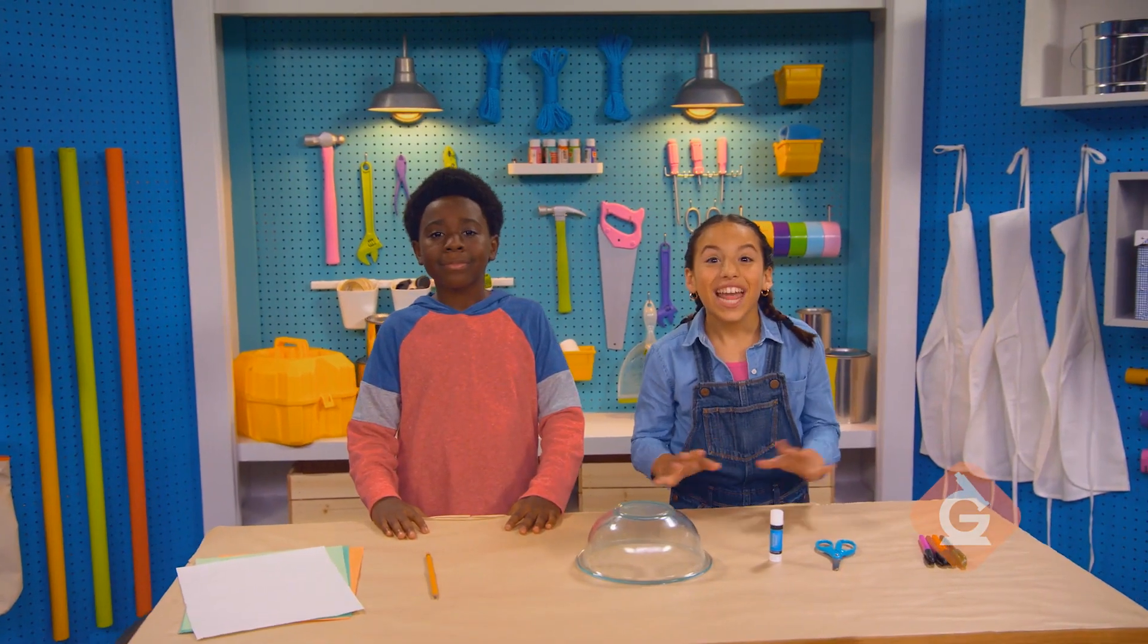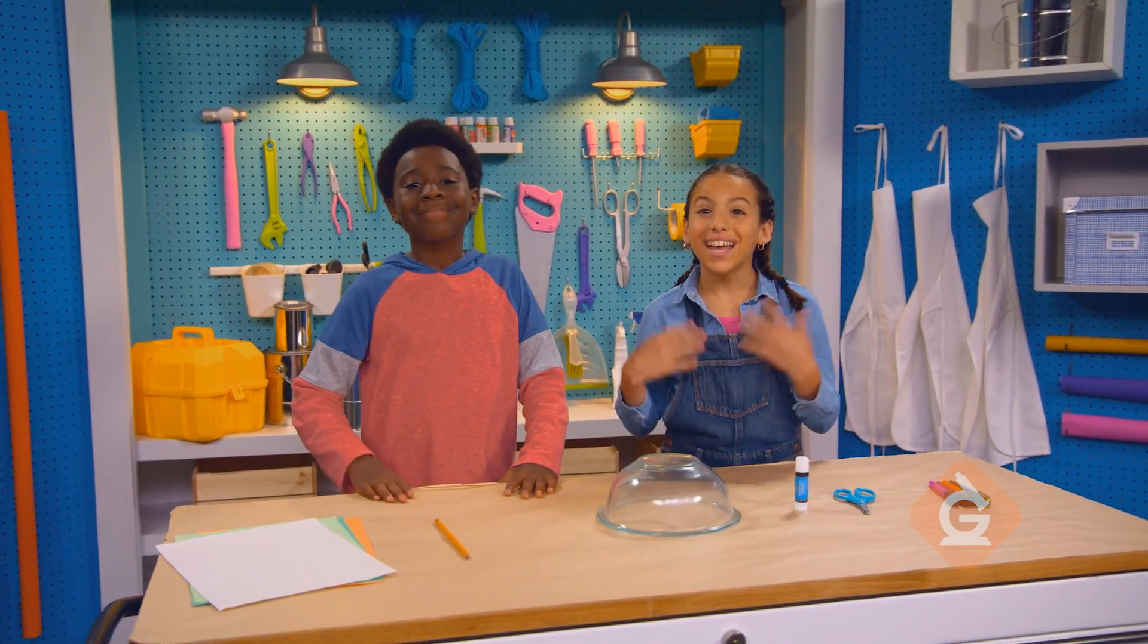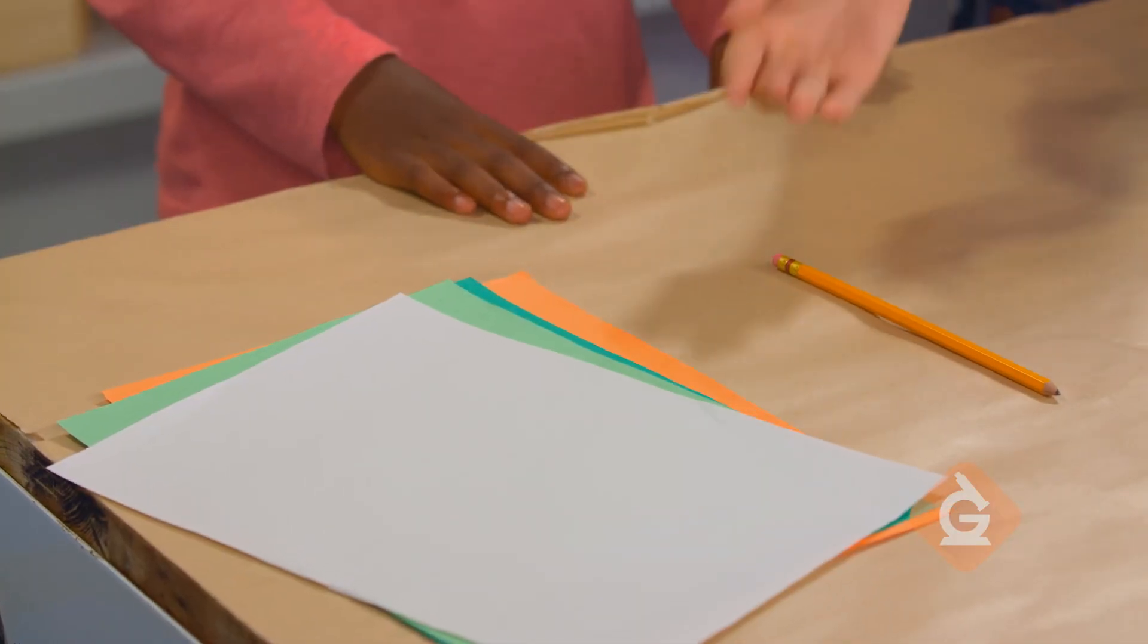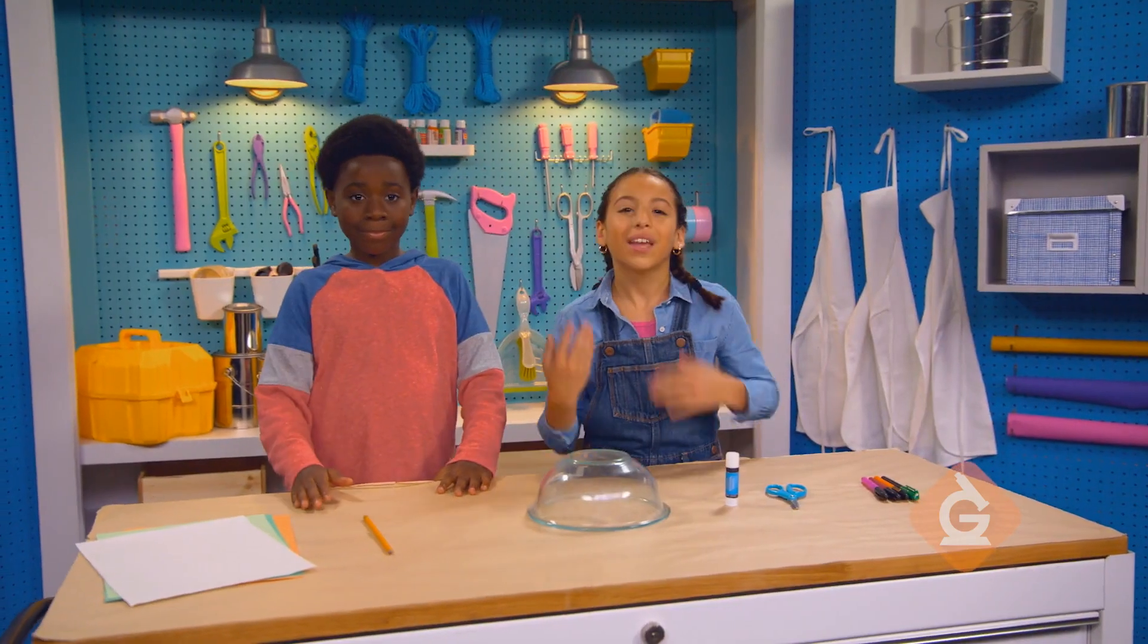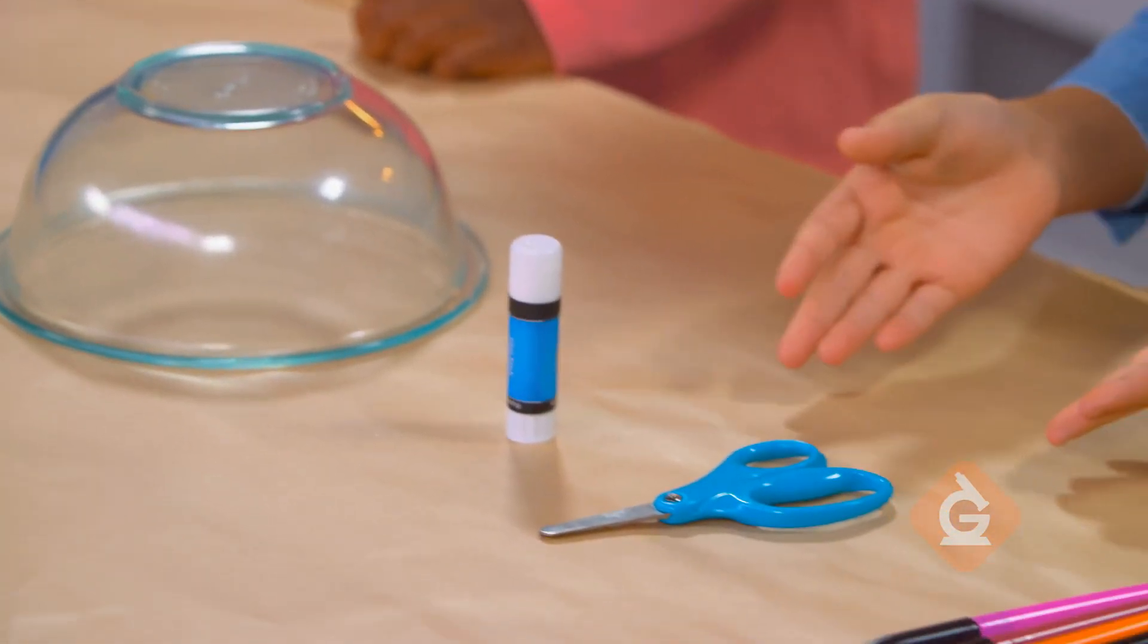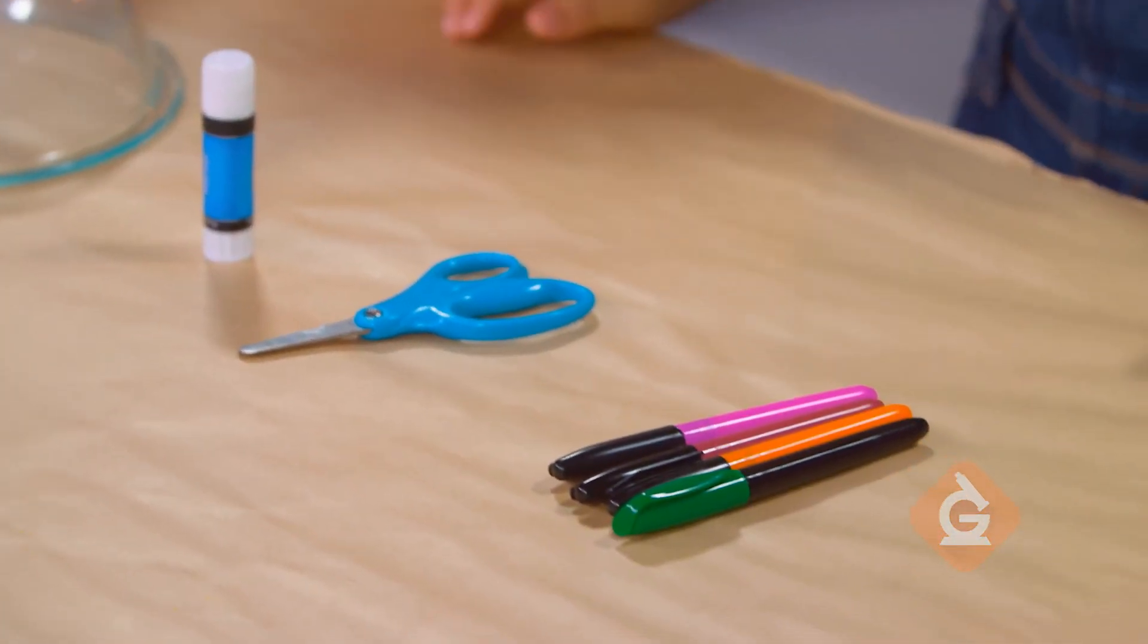You're going to need construction paper of a few different colors, like white, light green, dark green, and orange, a pencil, a bowl, a glue stick, a pair of scissors, and some markers.